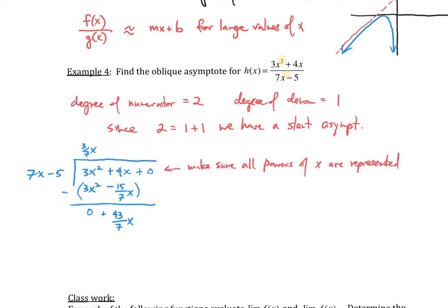And then what I want to do next is I want to figure out what do I need to multiply 7x by in order to achieve 43 over 7x. And I think the answer to that question is I need to multiply by 43 over 49. So when I multiply 43 over 49 times 7x, I am going to get 43 over 7x, which is what I wanted. But I still need to distribute and multiply the negative 5 by 43. So negative 5 times 43 is going to give me negative 215 over 49.